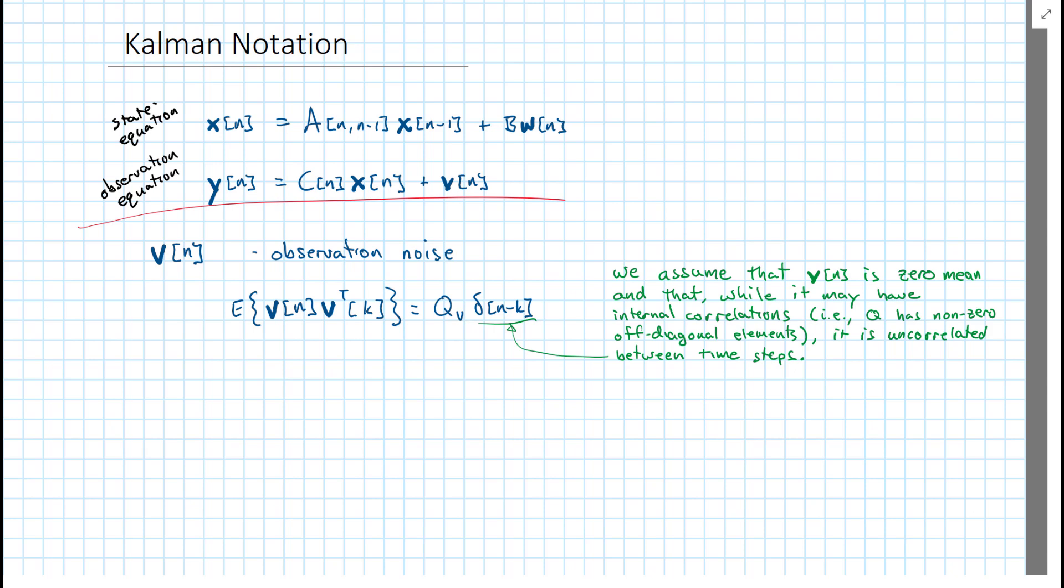We're going to have similar assumptions for our matrix, or our vector W. W is what we call the process noise.